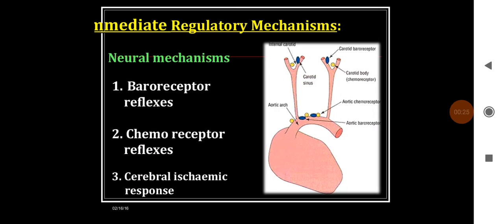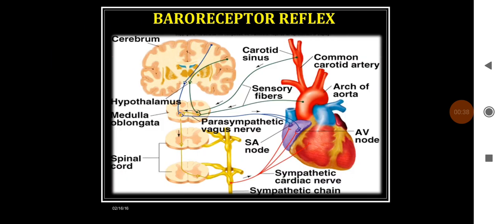Short term regulatory mechanisms are mainly neural mechanisms which are called as baroreceptor reflexes, chemoreceptor reflexes, and cerebral ischemic response. The baroreceptor reflex is also called as Mary's reflex. This reflex consists of receptors, afferent, centers, and effector. The baroreceptors are present on the aortic and carotid sinuses.